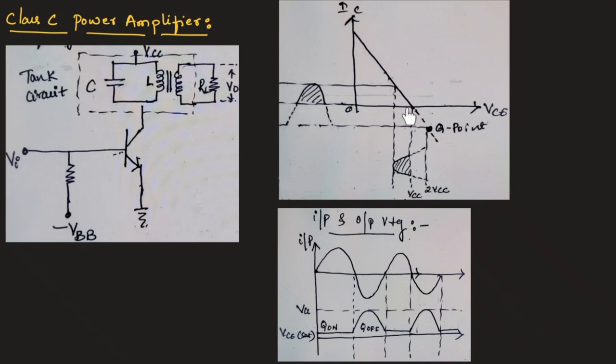As you can see in this diagram, since the Q point is below the cutoff region, the output will be for less than 180 degrees as shown in this figure.